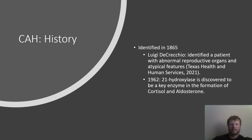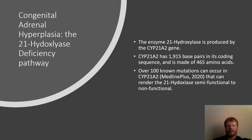The gene has over 1,900 base pairs in its coding sequence and is made of 465 amino acids. There are currently over 100 known mutations that can occur in this gene, and the degree to which that affects the 21-hydroxylase enzyme is on a spectrum, ranging anywhere from semi-functional to completely non-functional.